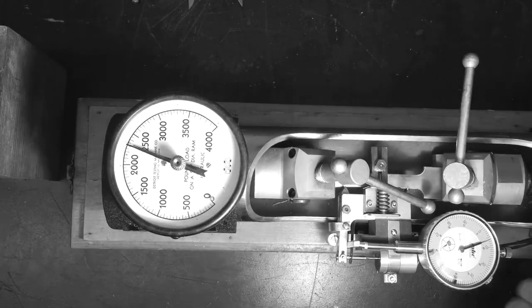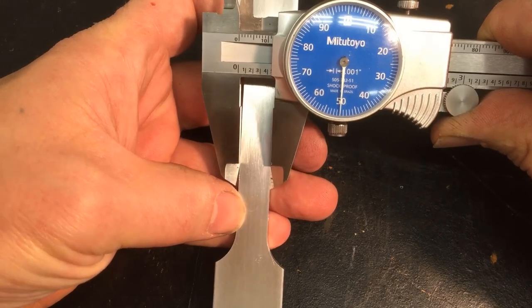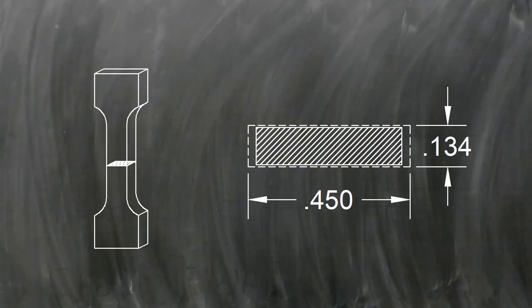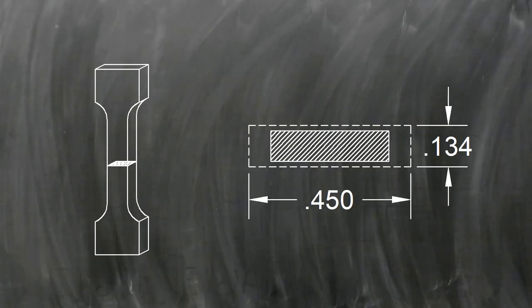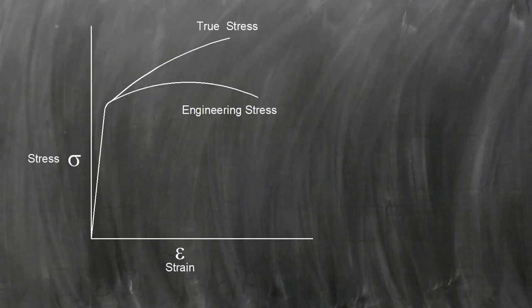When we performed the tensile test in the last video, we only measured the test specimen's cross-sectional area one time. As we pulled the specimen apart, its cross-section changed, but we didn't take any additional measurements. The reason for this is that we were interested in engineering stress and not true stress.